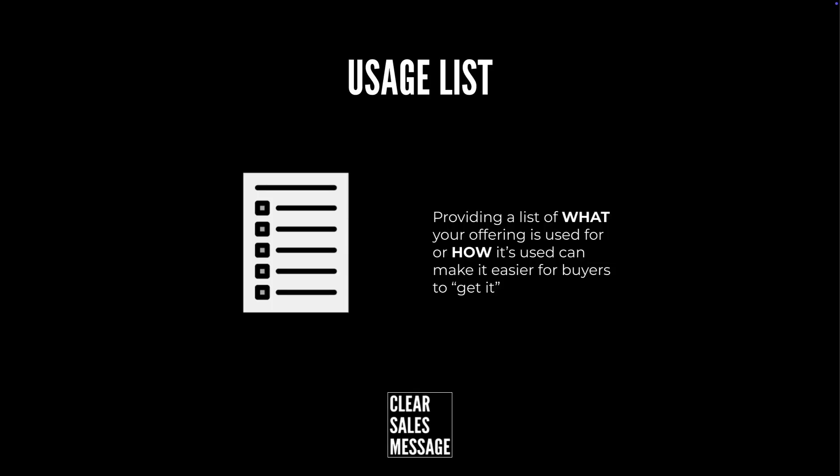So how can you use it? There are just two ways to do this. You can either talk about what your offering is used for. The example I've got here is 'people, payroll, productivity.' Let's say we've got some kind of SaaS product — software as a service — that's an HR kind of thing. It covers people, payroll, and productivity. So that's what your offering is used for.